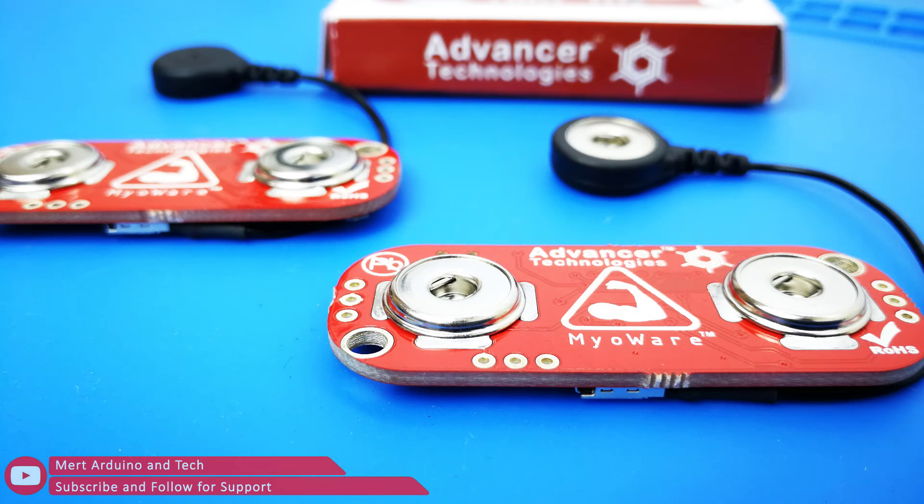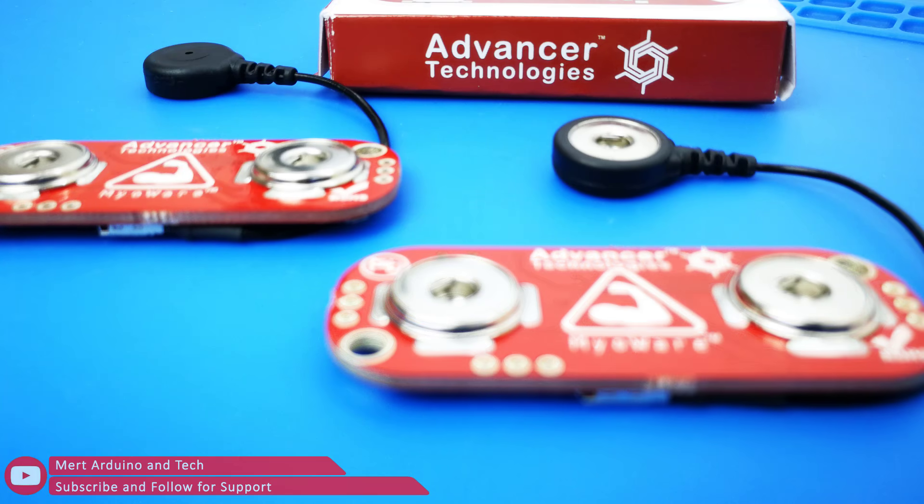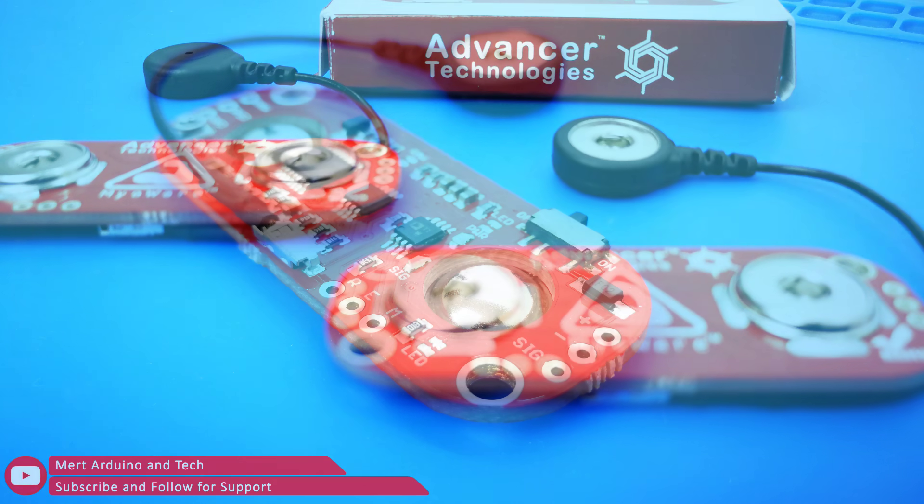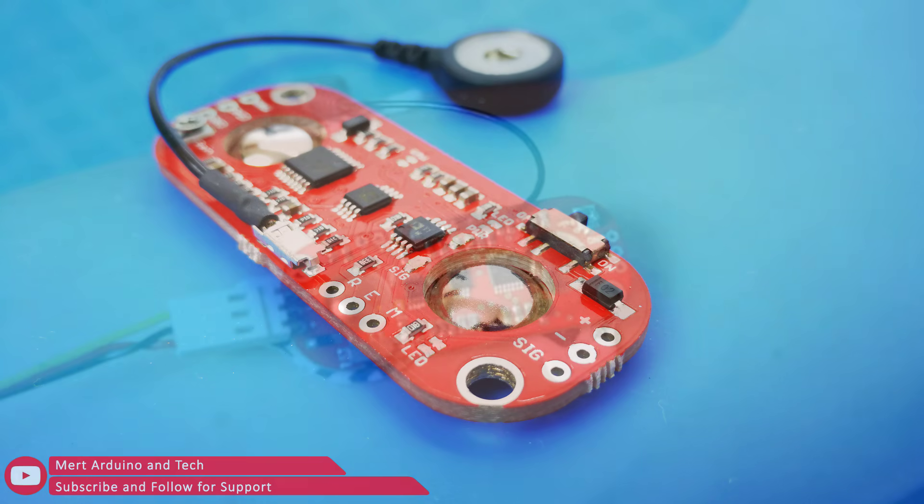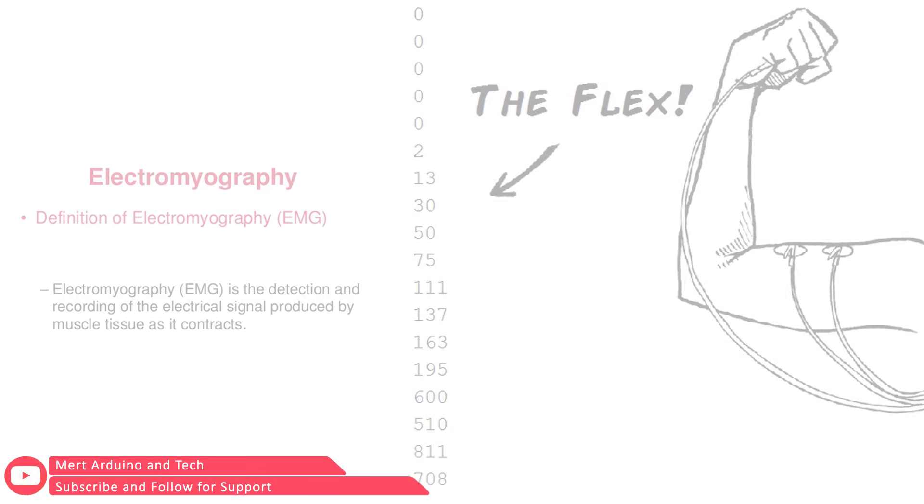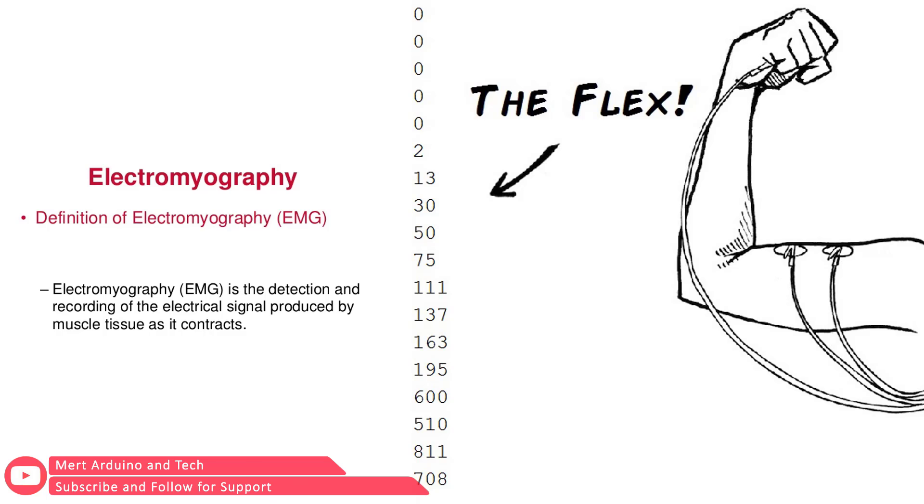This sensor is an all-in-one electromyography EMG sensor from Advancer Technologies. The MioWare board measures the filtered electrical activity of a muscle and provides volt output depending on the amount of activity in the selected muscle.